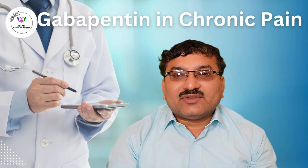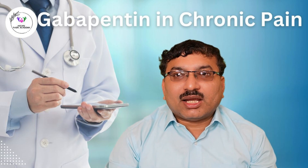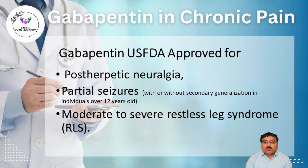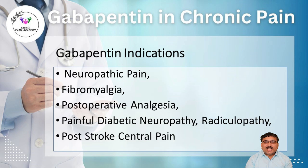Gabapentin is an anticonvulsant medication which is FDA approved for various pain conditions, among which the most important are post-herpetic neuralgia, partial seizures, and restless leg syndrome. Additionally, Gabapentin is used for neuropathic pain, fibromyalgia, post-herpetic analgesia, painful diabetic neuropathy, radiculopathy, and post-stroke central pain.